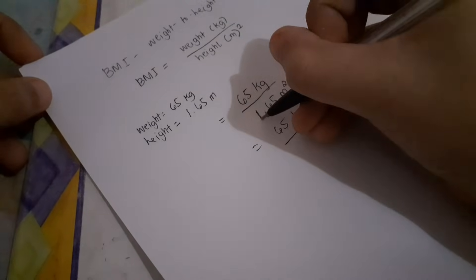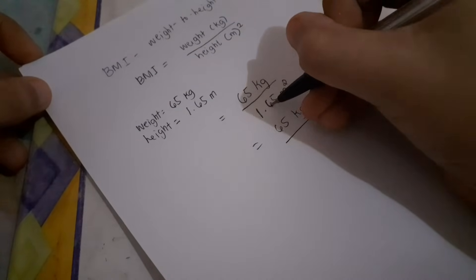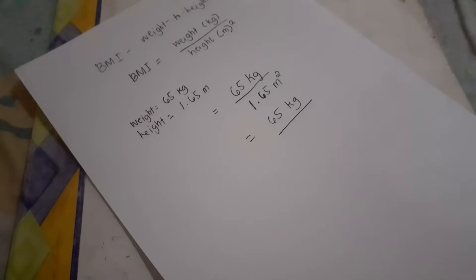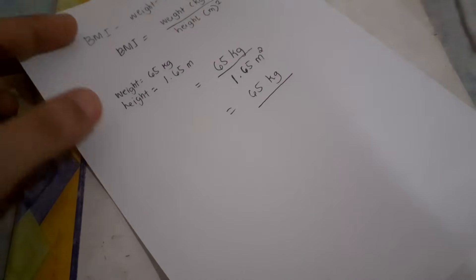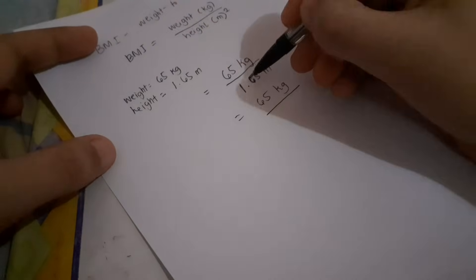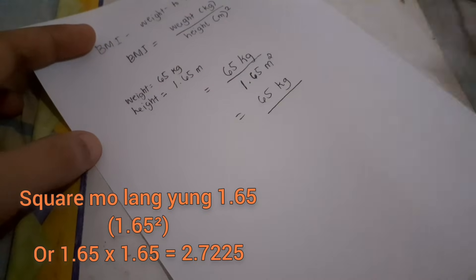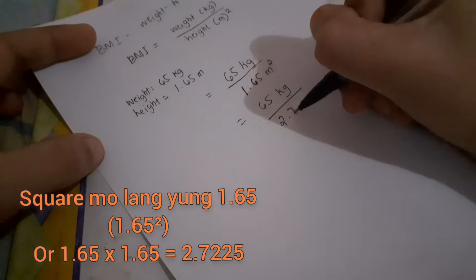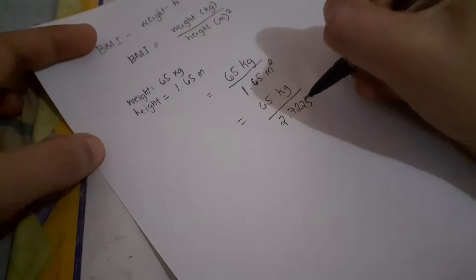Copy lang ulit. Ano yung square? 1.65 squared. So get your calculator para madali mong ma-solve itong 1.65 square. So nung kinompute ko, ang sagot ay 2.7225.